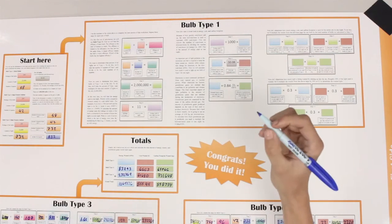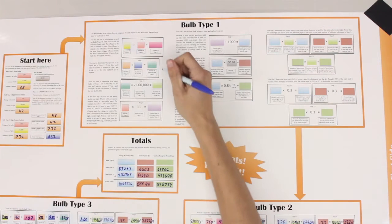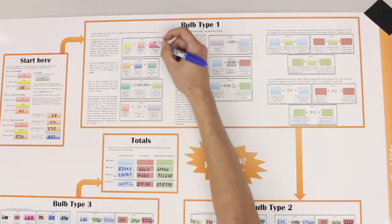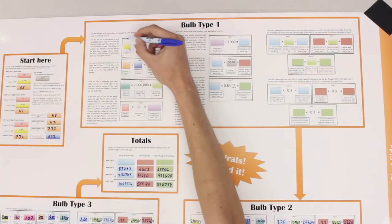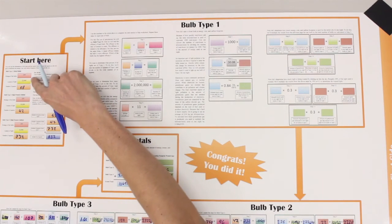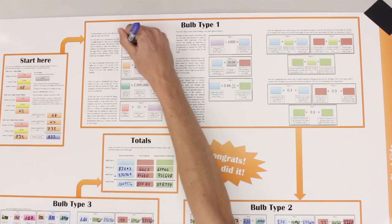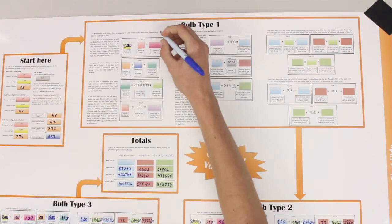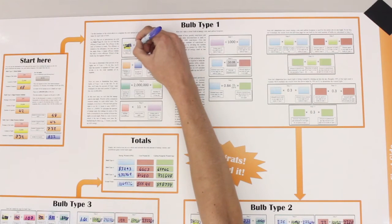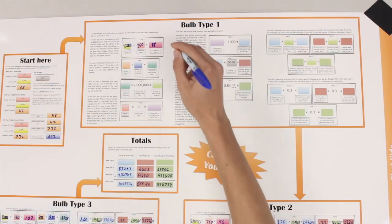In the bulb type 1 box, we can start by finding the efficiency of bulb 1. In the first box, put the number of lumens from the corresponding bulb. In this case, it's 22,000. This gives an efficiency of 88 lumens per watt.